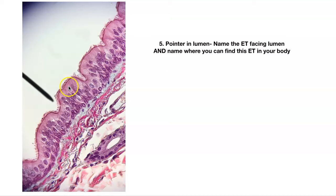Number five. Name this epithelium. We have cilia, elongated nuclei. It looks stratified, but we know it's not — the basement membrane is down here. This is pseudostratified ciliated columnar epithelium. Where can you find this? You find it in your large airways carrying air into your lungs. Most of these slides are taken from your trachea.